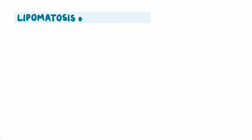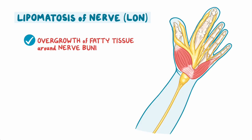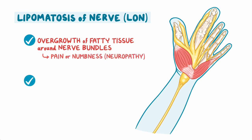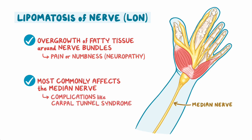In lipomatosis of nerve, or LON, there is overgrowth of fatty tissue around nerve bundles causing pain or numbness, called neuropathy. It most commonly affects the median nerve, which controls the forearm, leading to complications like carpal tunnel syndrome.